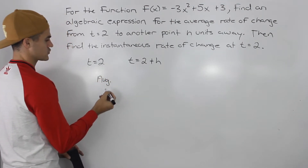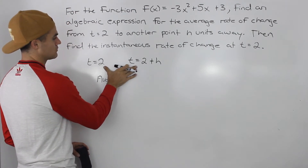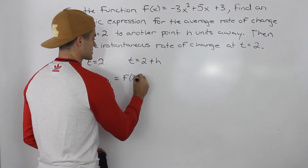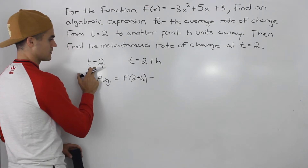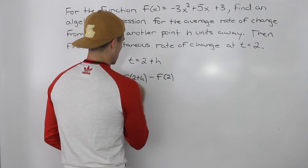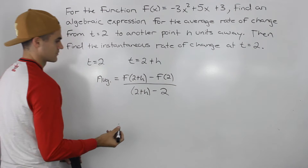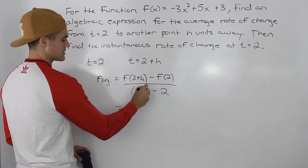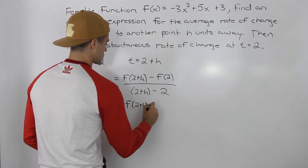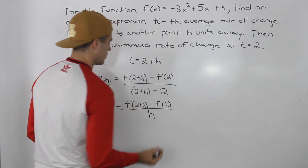The average rate of change is going to be the value of the function at this t value — so f of 2 plus h — minus the value of the function at t equals 2, so minus f of 2, all over 2 plus h minus 2. Notice how we can simplify this denominator: the 2's cancel out, so we'd have f of 2 plus h minus f of 2 all over h.